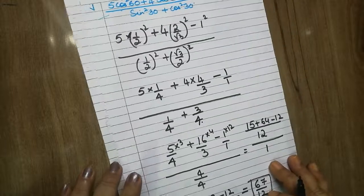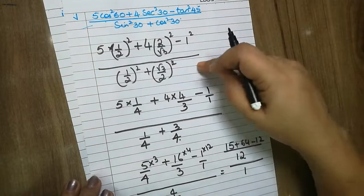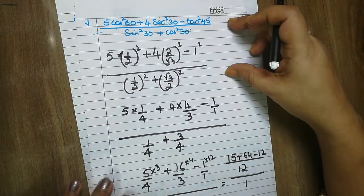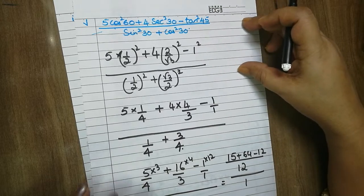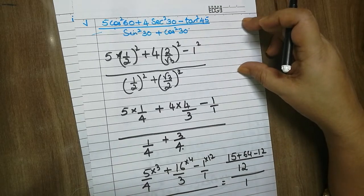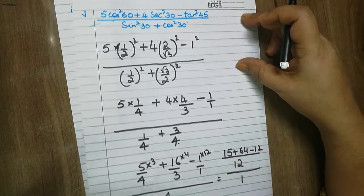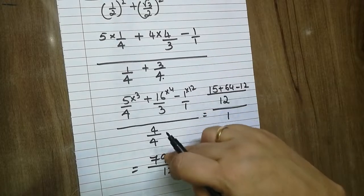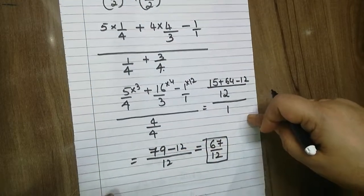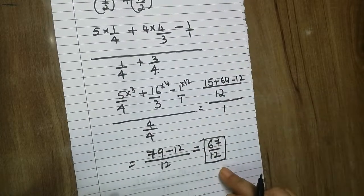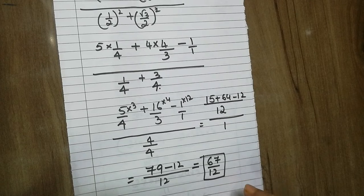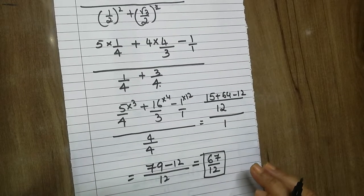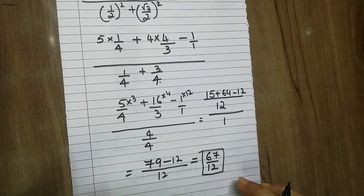In 10th standard, this topic is only about substituting the values. You must remember the trigonometric values or draw the table within 1 minute and then continue with the sum. Make sure to do the simplification correctly. This was Exercise 8.2, first domain, 3rd, 4th and 5th sums. Thank you.